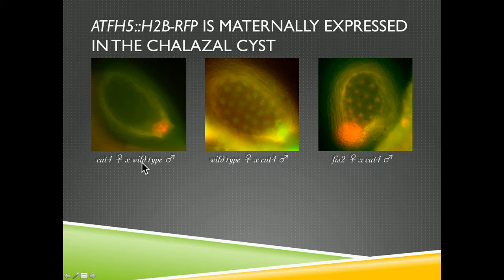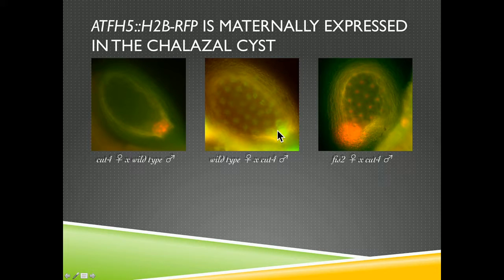If I switch that - if I do the reciprocal cross, now the mother's wild type and the father is bringing in the reporter - we don't see any expression at all. So that's parental genomic imprinting: the expression is dependent on the parent that gives the gene and not the presence of the gene itself.